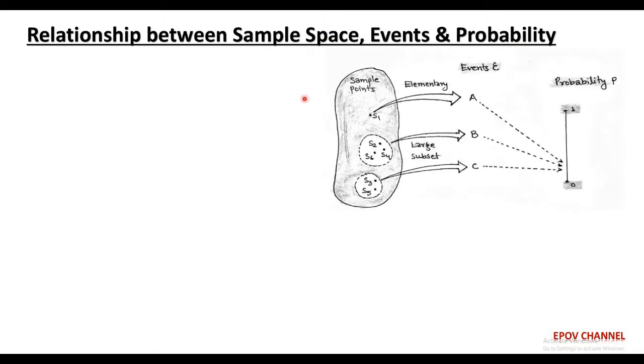Next, we discuss the relationship between sample space, events and probability. As we know, sample space consists of all the possible outcomes represented by corresponding sample points. Here, let us consider 6 sample points which represent a sample space.